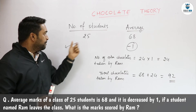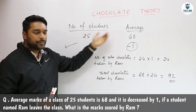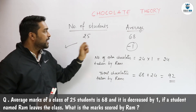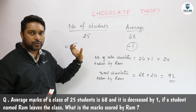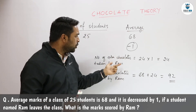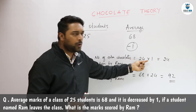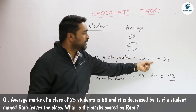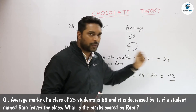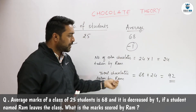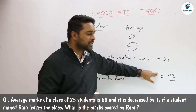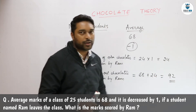Since Ram was a part of the class, he must have had 68 chocolates initially with him, and he has taken one chocolate from each of the rest of the 24 students. So the number of extra chocolates taken by Ram is 24 into 1, which is 24 chocolates. The total number of chocolates taken by Ram will be 68 plus 24, which is equal to 92. So Ram's marks are 92.